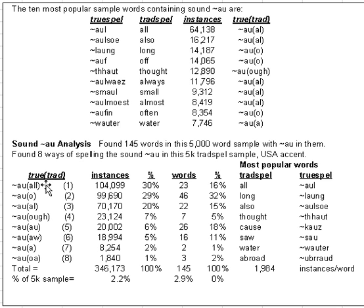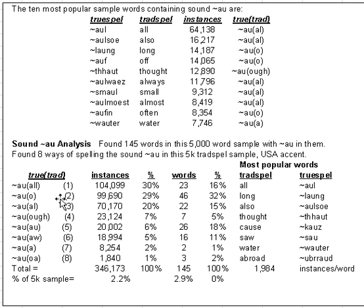These are broken down, and you can see that for A-double-L — that's the True Spell marked with a tilde, which always signifies True Spell — that is the traditional spelling letter string that is counted. A-double-L represents 30% of all instances. Letter O represents 29% with 99,000 instances, and AL represents 70,000 instances.